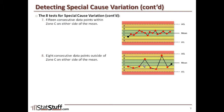It doesn't reflect the normal type of variation we'd expect to see, where something should be falling within Zone C at least within the span of eight different observations.